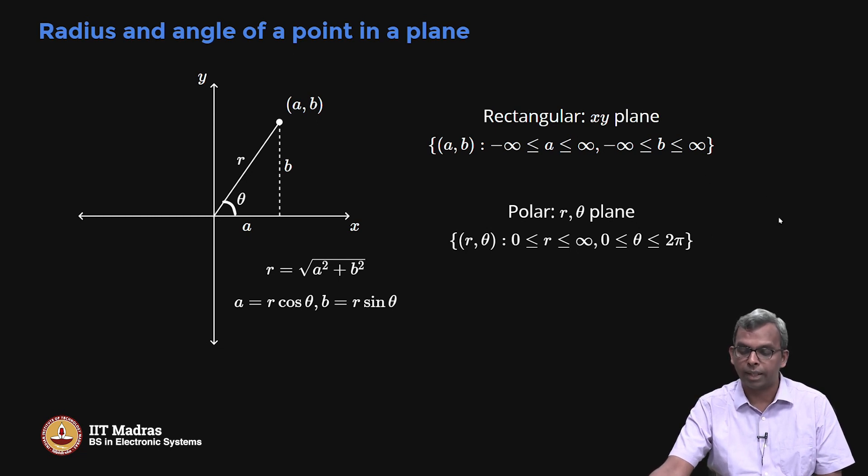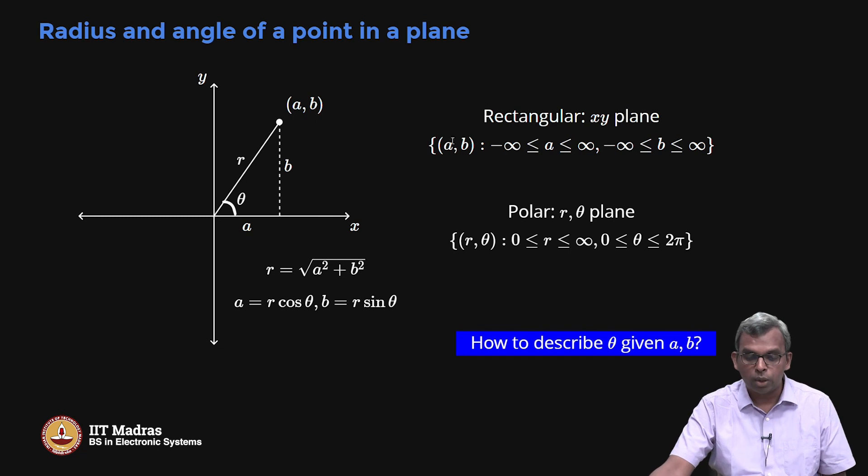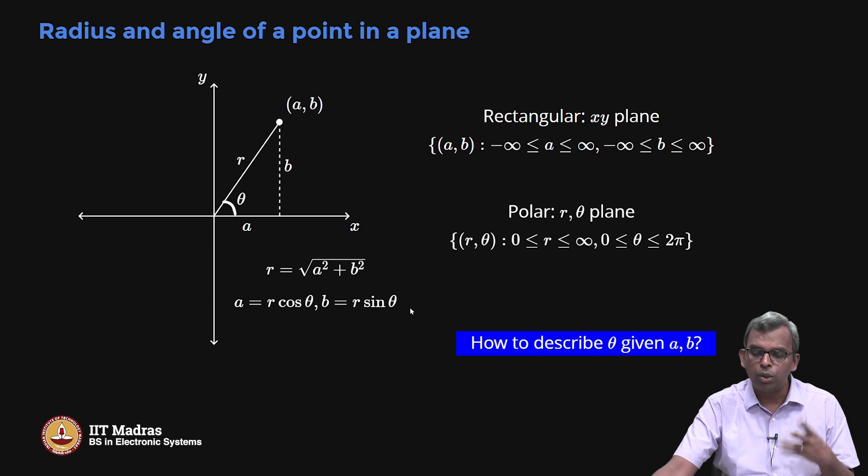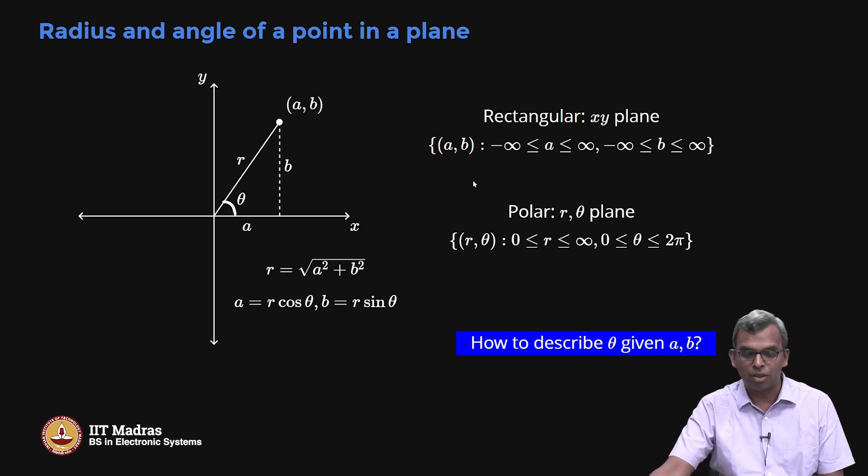These are called polar coordinates, these are called rectangular coordinates. So you can see, given polar coordinates r θ, you can go to rectangular coordinates very easily. This formula gives you that: a equals r cos θ, b equals r sin θ. How do you do the other way around? Given rectangular coordinates, how do you go to the polar coordinates? r is easy - root of a squared plus b squared. What about θ? How do you describe θ? We need some additional notation for that.